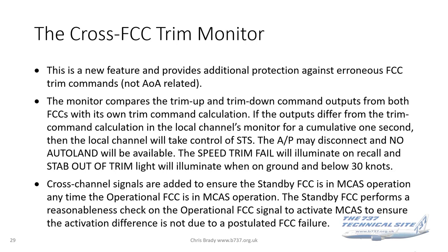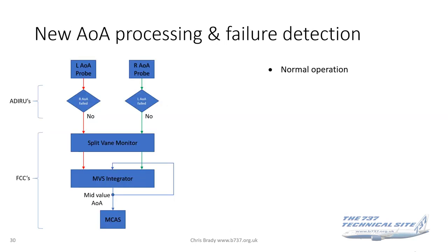The speed trim fail light will illuminate on recall, and the stab out of trim light will illuminate on the ground. Cross-channel signals are added to ensure the standby FCC is in MCAS operation any time the operational FCC is in MCAS operation — so both FCCs will be in use for MCAS. The standby FCC performs a reasonableness check on the operational FCC signal to ensure that activation is not due to a random electrical signal or FCC failure.